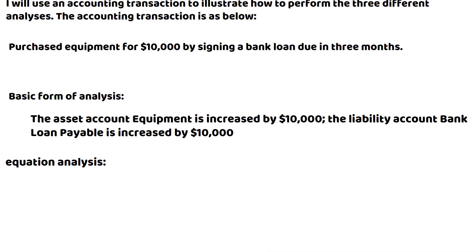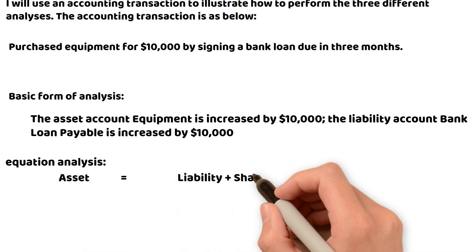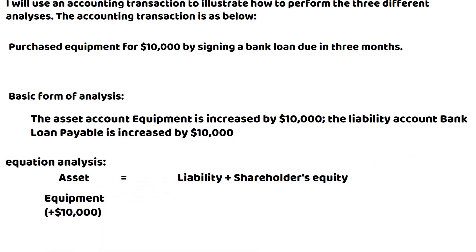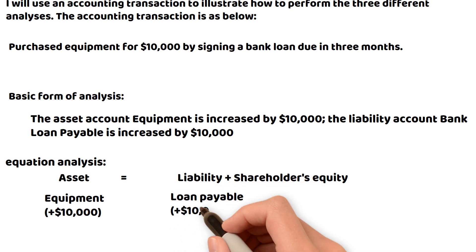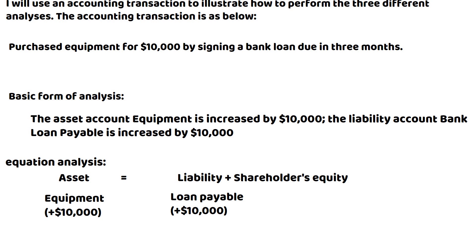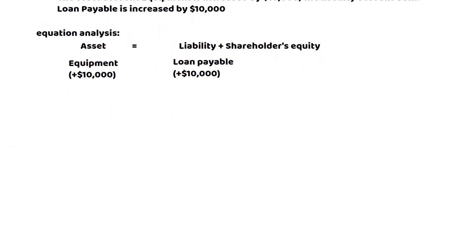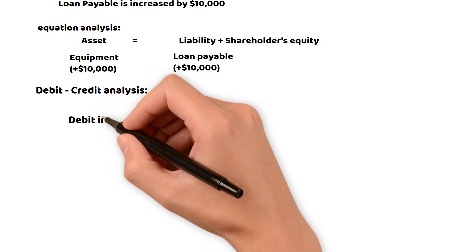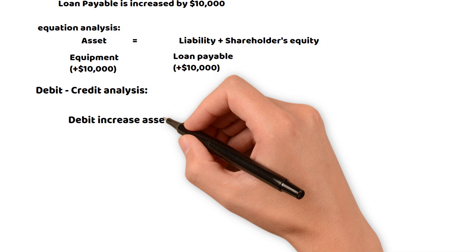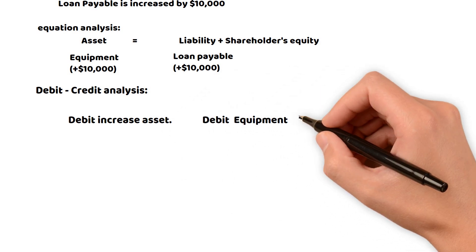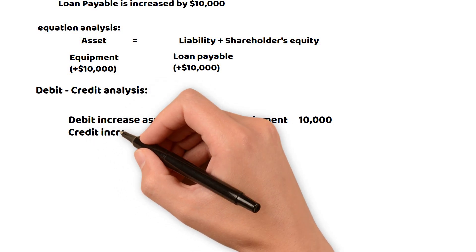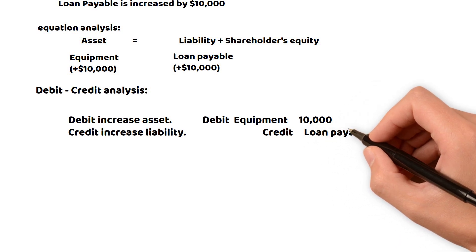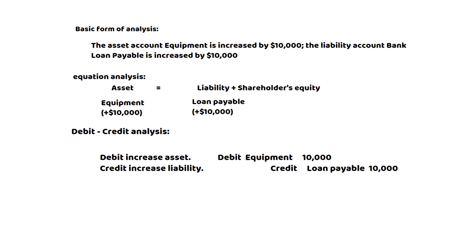For equation analysis, we use the basic accounting equation: assets equals liabilities plus shareholders' equity. Equipment is increased by ten thousand, and loan payable is increased by ten thousand, so both sides increase by ten thousand — the equation is still balanced. For debit-credit analysis: debit increases the asset, so you debit equipment for ten thousand; credit increases liability, so you credit loan payable for ten thousand. Debit equals credit.